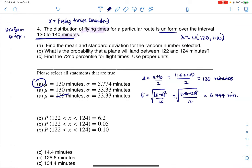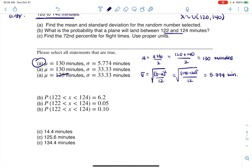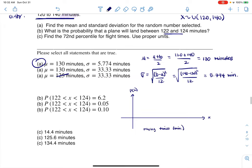And then it says, what is the probability that a plane will land between 122 and 124 minutes? Okay, so for me, I always like to draw a graph. I find that helpful. So let's go here, and we'll put probability. And this is going to be, again, flying times, units are minutes. And you don't have to make a graph. I just, for me, I like to. So we go 120 to 140.